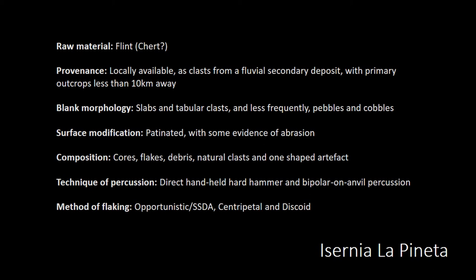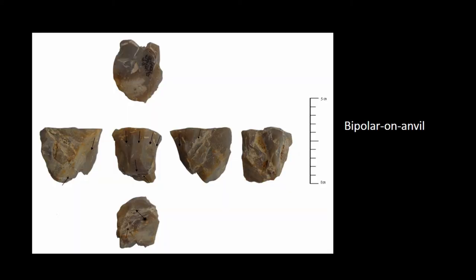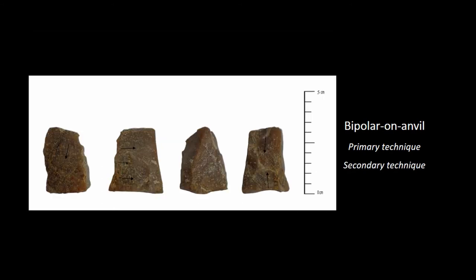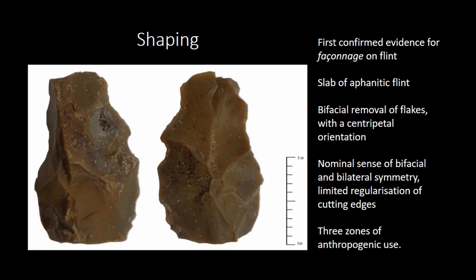Three methods of flaking were identified: the dominant being opportunistic, followed by centripetal and then discoid. With regards to the bipolar anvil percussion, it is applied in two stages — either as the primary technique, wherein the core blank is exploited only using the bipolar anvil technique, or as a secondary technique wherein a core previously exploited using some other strategy — in this case unidirectional longitudinal — is subjected to bipolar and anvil in the final stage before discard. There is one confirmed evidence of façonnage on flint.